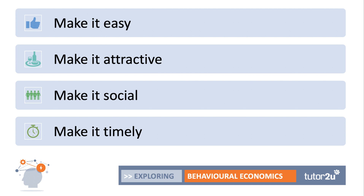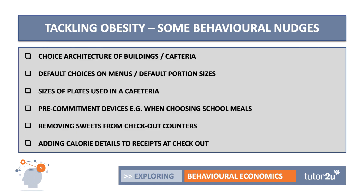In theory that's fine, but what does it mean in practice? Here are some examples of behavioral nudges that have been tried, are being used, or are being considered in the UK and in other countries. One is choice architecture — the idea that Richard Thaler came up with. The way in which a cafeteria, canteen, or restaurant is organized can influence choices. So if you want a burger or a hot dog you can have one, but you have to go past the healthy salad bar to get there.